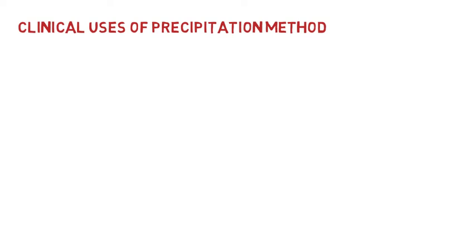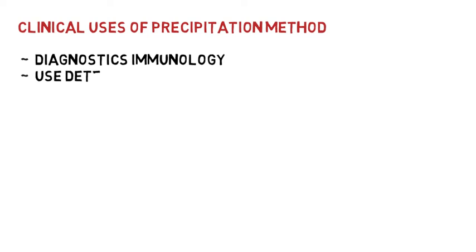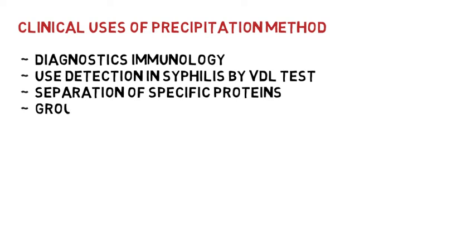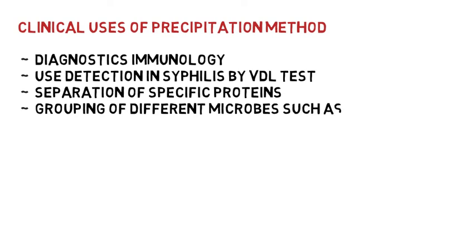Let's have a look at some clinical applications of precipitation reaction. It is widely used in diagnostic immunology. It is used in the detection of syphilis in patients by the VDRL test — which stands for Venereal Disease Research Laboratory test. It is also used in the suppression of specific proteins by precipitating them using their specific antibodies. It can be used for the grouping of different microbes such as Streptococcus based on the presence of antigens, and for the standardization of toxins with their respective antitoxins.